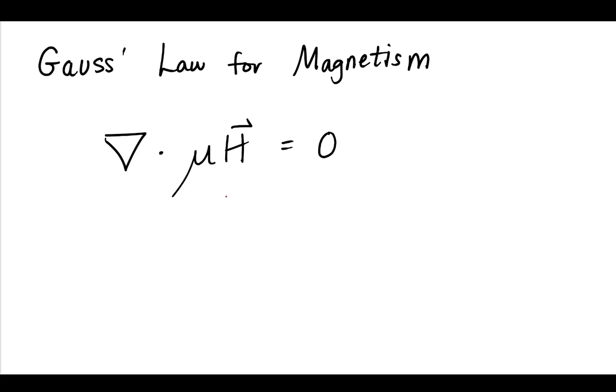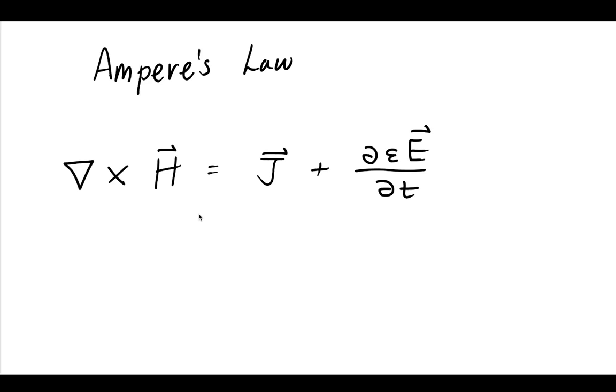Now, Gauss's law for magnetism, right? We've just substituted in our linear isotropic condition. We know that the divergence of that is zero. Therefore, in phasor domain, we just have the divergence of the phasor magnetic field is zero.